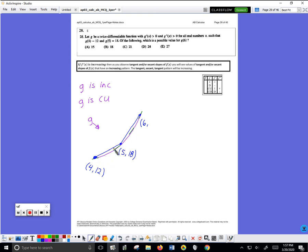18 doesn't work because that would make G go up and then flatten out at 18. G has to be increasing.